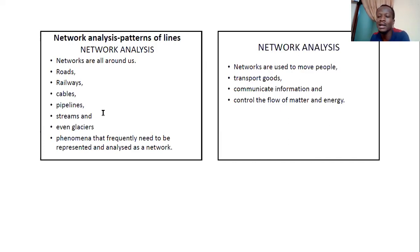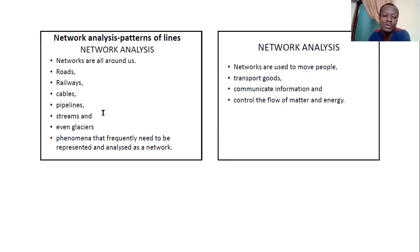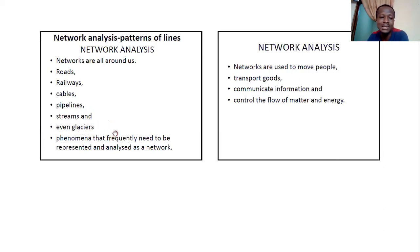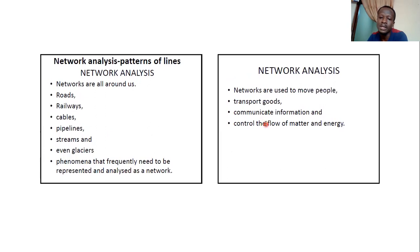In a pipeline network, the nodes are the junctions between pipes — that connector piece plumbers use. At that junction there is a connection. Networks work well with topologically correct datasets. Streams are also examples of networks — one stream joins another, tributaries and all that. Glaciers, which are huge formations of ice, are also networked in a way. These are phenomena that frequently need to be represented and analyzed.